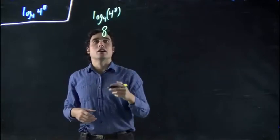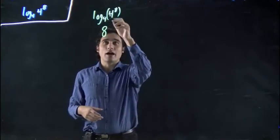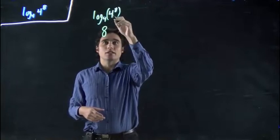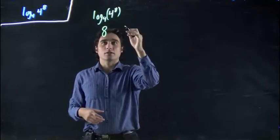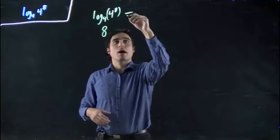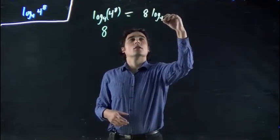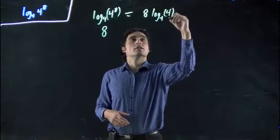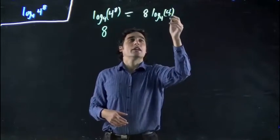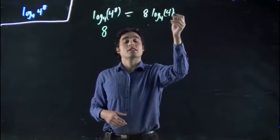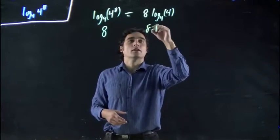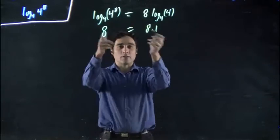So, this can immediately be thought of as 8. If you have the base and a number here the same, all that's left is the exponent. In fact, we can apply that power rule and rewrite this as 8 log 4 of 4. Well, what does 4 need to be raised to to get to be 4? To the power of 1. So, 8 times 1, which is of course the same thing.